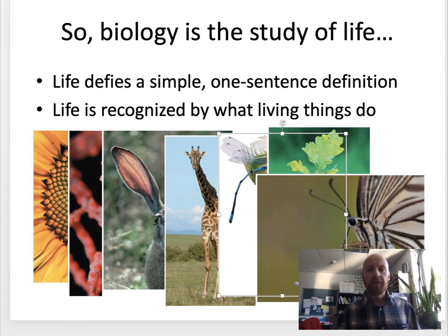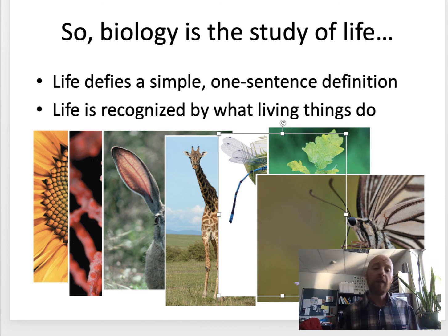So life is not defined by a simple one-word answer — there are seven properties that it takes for something to be alive. Life is recognized by what things do, not what they are. You need all seven of those properties to be considered alive.